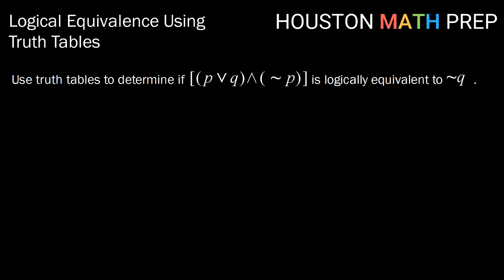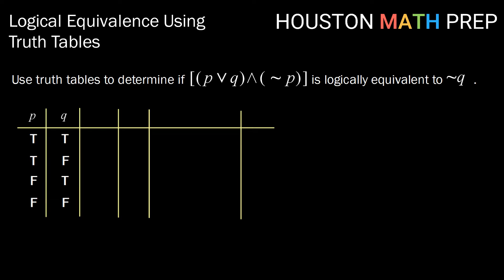Let's try another example: use truth tables to determine if (P or Q) and not P is logically equivalent to not Q. We'll start with P and Q in our normal organized pattern, then look at P or Q, then grab not P, and then the conjunction of the two: (P or Q) and not P.